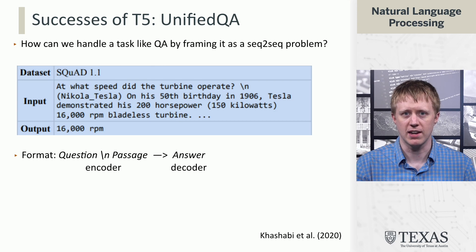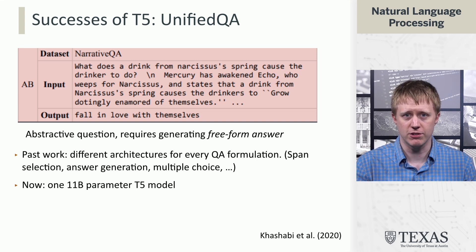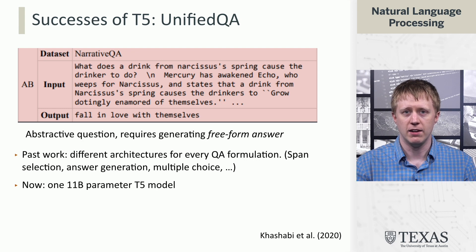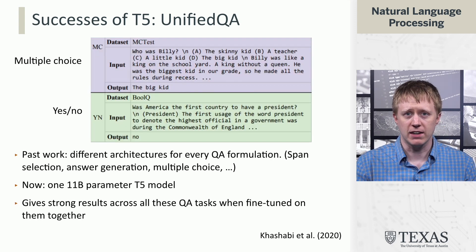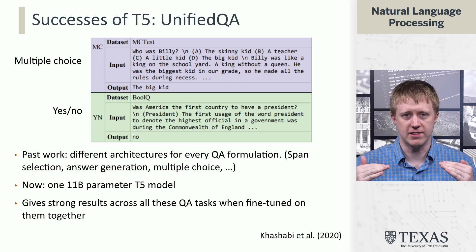For example, the SQuAD question answering dataset has inputs that look like paragraphs and outputs that are selections from that paragraph — but we can just treat that as a sequence-to-sequence problem. We can do the same with question answering datasets where the output does not appear in the input, telling the model to generate a new string as output. They also unified multiple choice question answering, where you pick from a set of options, and Boolean yes/no question answering. Training a big T5 model over all of these datasets at once ended up doing quite well at all of them.